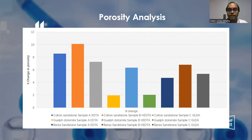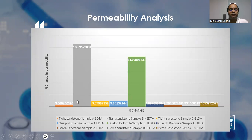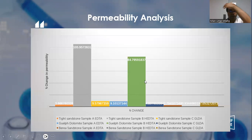For permeability, the results are also the same — maximum increase in permeability has been shown by HEDTA in the case of tight sandstone and in the case of Gulf dolomite.